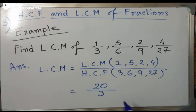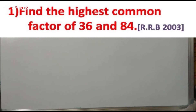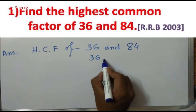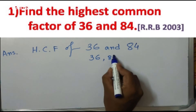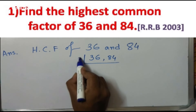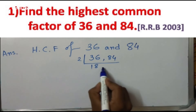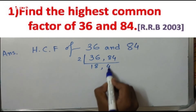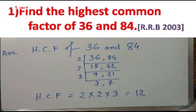Now let's practice a few more examples. First question: find the highest common factor of 36 and 84. This question came in RRB 2003. We follow the standard procedure to find the HCF. The highest common factor is 2 × 2 × 3, that is 12. So the HCF between 36 and 84 is 12.